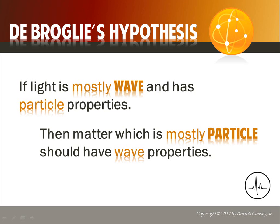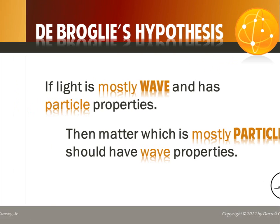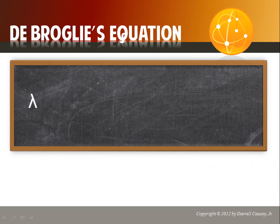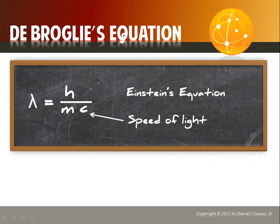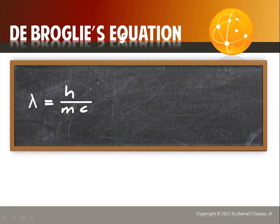De Broglie took all of his information, put it together, and sent it off to Albert Einstein. Einstein wrote back to his professors and told them this was the brightest young man he had ever seen and that his hypothesis made perfect sense. De Broglie's equation was based on Einstein's equation for the speed of light. De Broglie assumed we could replace the speed of light with velocity — meaning the wavelength is related to the momentum of matter waves, giving us matter wavelengths.